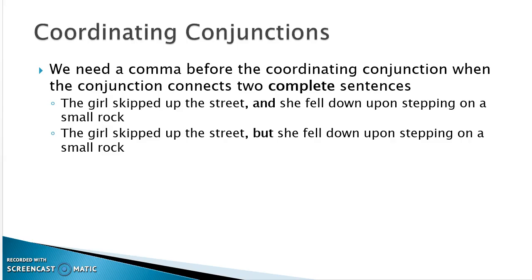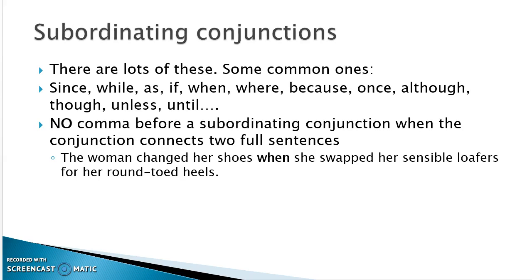The coordinating conjunction you use actually matters because it carries meaning — 'and' suggests addition, while 'but' suggests the ideas are opposite each other. Another way to fix a run-on is to use a subordinating conjunction. There are lots of these: while, as, if, where, when, once, although, though, unless, until — which is why it's easier to remember the coordinating conjunctions. There are only seven.